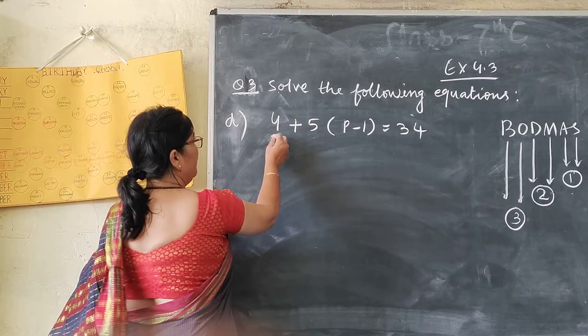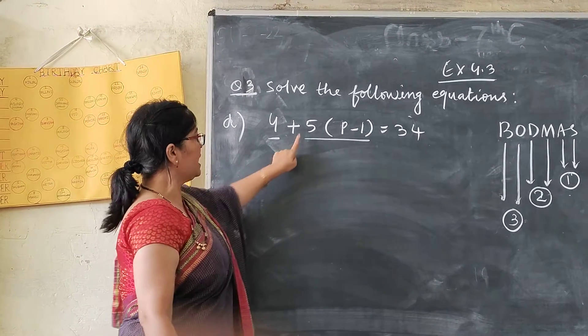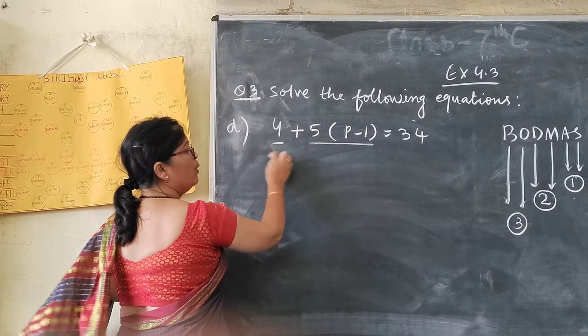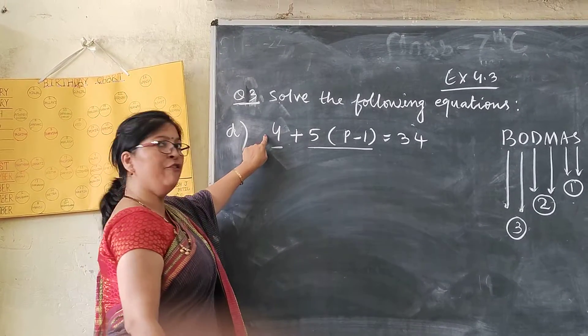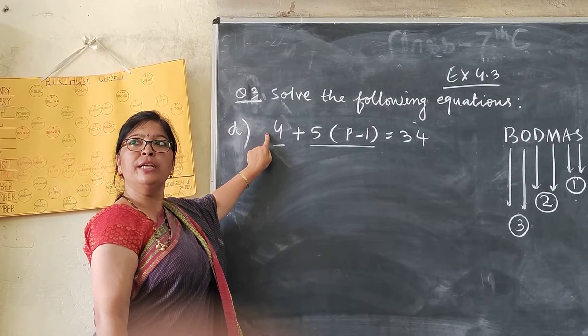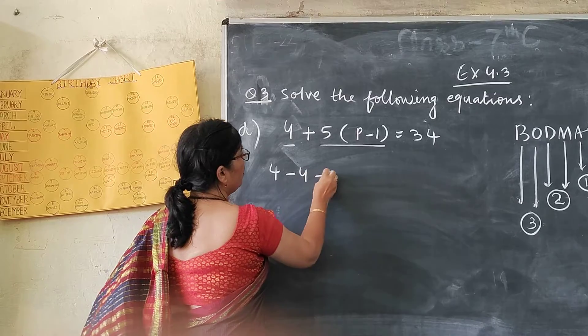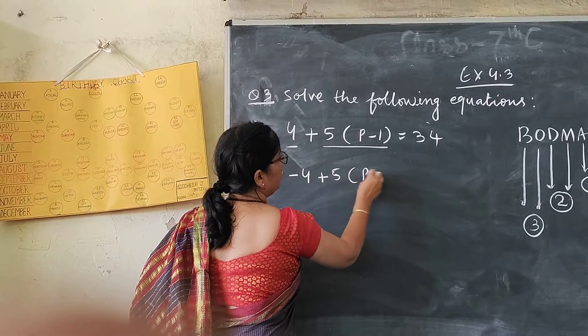Yes ma'am. It is between this number and this number. Plus sign is between this number and this number. So this number will be removed first. Positive 4. Opposite of positive 4 is? Negative 4. So 4 minus 4 plus 5T minus 1.